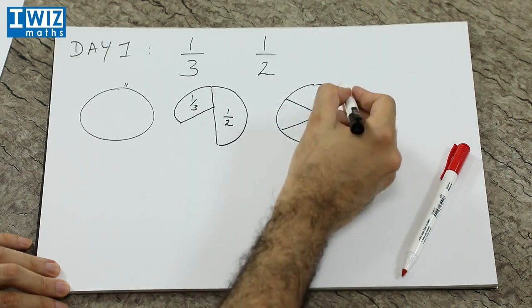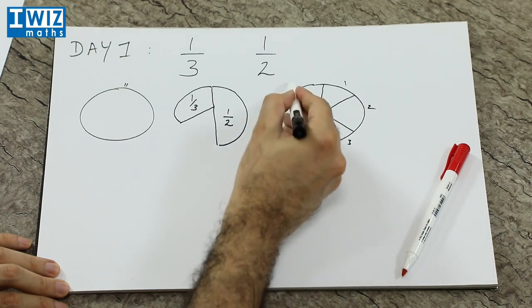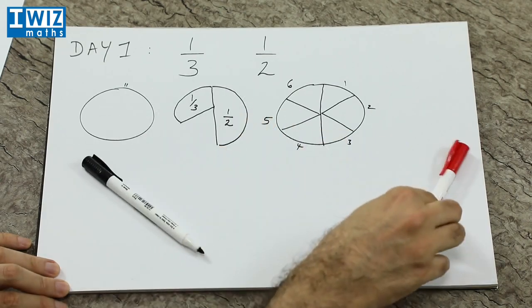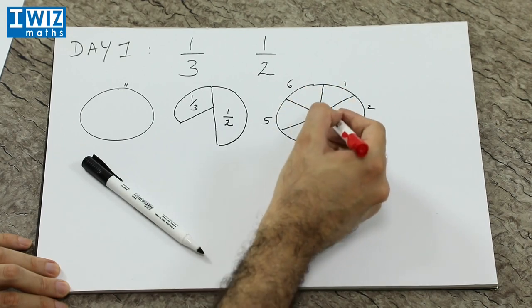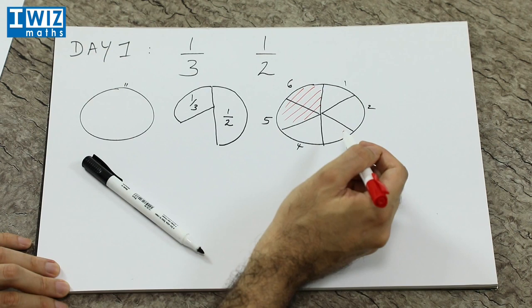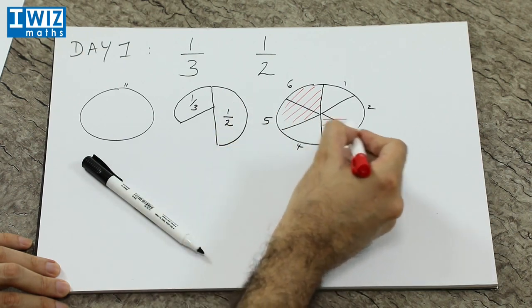Let's label these parts. So that's one, two, three, four, five, and six. Before lunch I had one-third, so I shaded the equivalent area, which is that. After lunch I have had one-half of the apple, so I shaded that area.